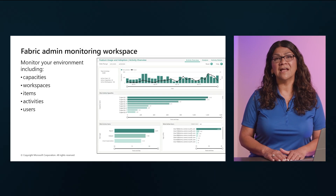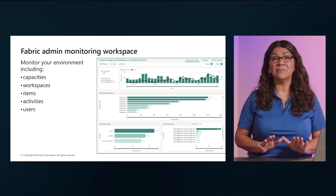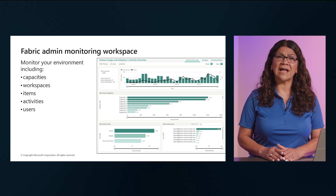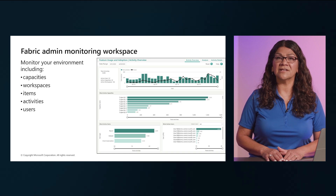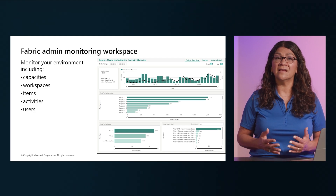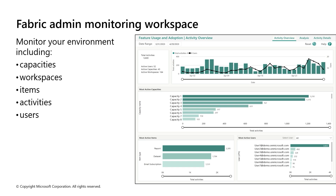Fabric tenant admins have access to the new admin monitoring workspace. You can choose to share access to the admin monitoring workspace, or specific items within it, with other users in your organization. The admin monitoring workspace includes the feature use and adoption dataset and report, which together provides insights on the usage and performance of your Fabric environment. You can use this information to identify trends, patterns, and to troubleshoot issues.